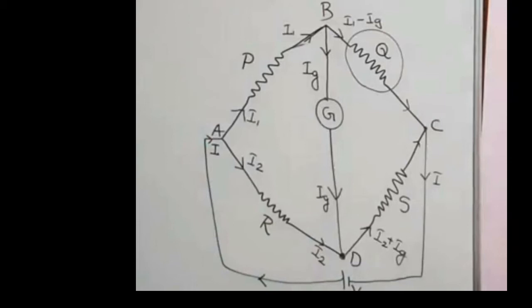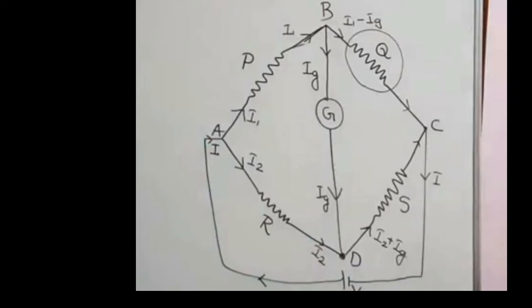This is the current flow. We have two loops: loop A-B-D-A and loop B-C-D-B. We apply Kirchhoff's Voltage Law to these loops. The sum of all voltage drops around a closed loop equals zero. We have two loop equations to solve.